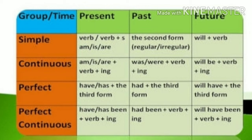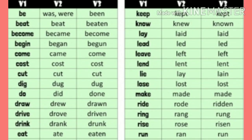For present perfect we write 'has' or 'have' plus the third form of the verb. For past perfect we write 'had' plus the third form of the verb. For future perfect we write 'will have' plus the third form of the verb. For present perfect continuous we write 'have' or 'has been' plus verb plus 'ing.' For past perfect continuous we write 'had been' plus verb plus 'ing.' And for future perfect continuous we write 'will have been' plus verb plus 'ing.' To write these forms, we must know the three forms of the verb.